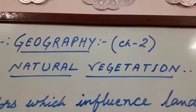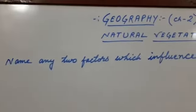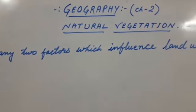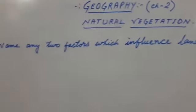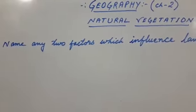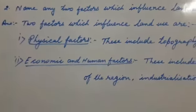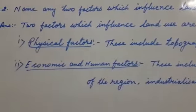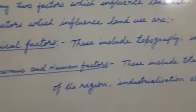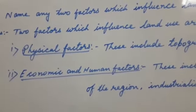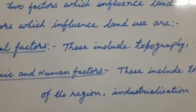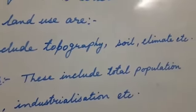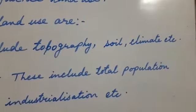Now the second question: name any two factors which influence land use. The answer — two factors which influence land use are: number one, physical factors. These include topography, soil, climate, etc.